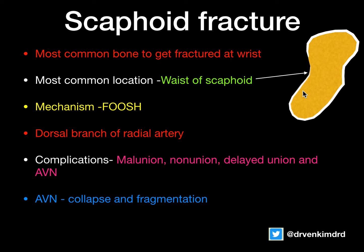A few salient features about scaphoid fracture: it is the most common bone to get fractured at the wrist, and the most common location is always the waist of the scaphoid. The mechanism is fall on outstretched hand — FOOSH, which is very commonly used in orthopedic terminology. The dorsal branch of the radial artery is the main arterial supply for the entire scaphoid, going distally and then branching proximally to supply the entire scaphoid bone.